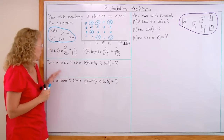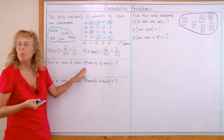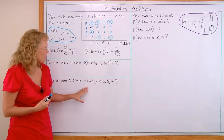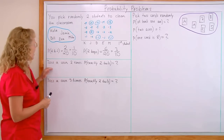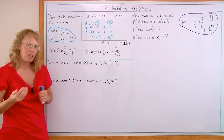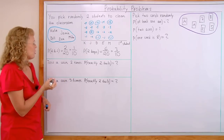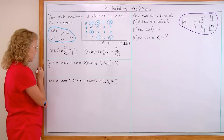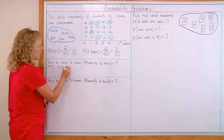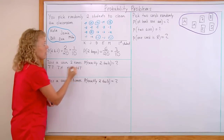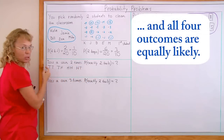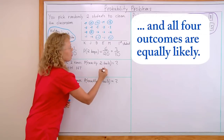Next problem: toss a coin 2 times. What's the probability of getting exactly 2 tails? I toss a coin twice — what are all the possible outcomes? We can just list them: tail and tail, tail and heads, heads and heads, or heads and tail. There are only 4 possible outcomes. Exactly 2 tails is just one of them, so the probability is 1 fourth.